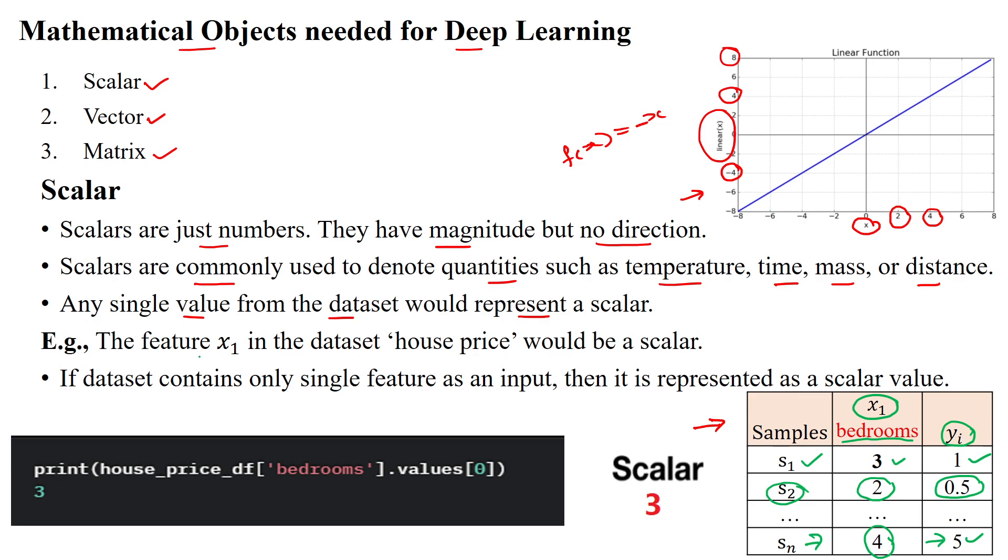Sample number n has 4 bedrooms, represented as 5k. If the dataset has a single feature, the values of that feature are considered scalar values. If you use Python code in Jupyter notebook or Spyder, you can print the bedroom values. This is the dataframe name and feature name, giving values of the first feature. The value 0 is the first feature and first row, giving a scalar value with no direction.